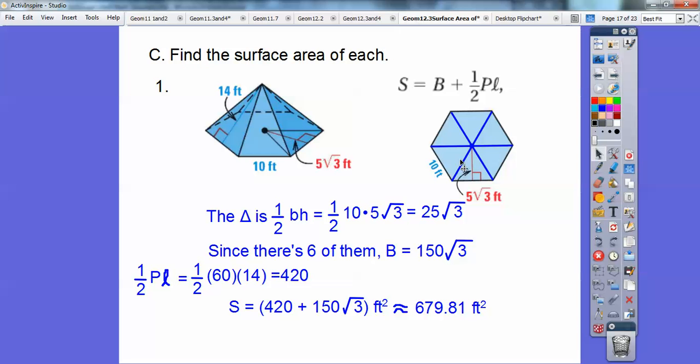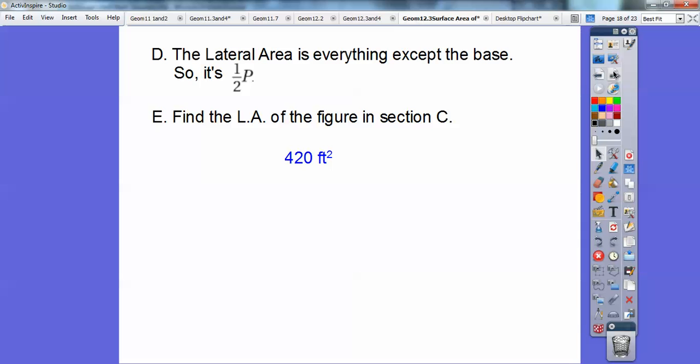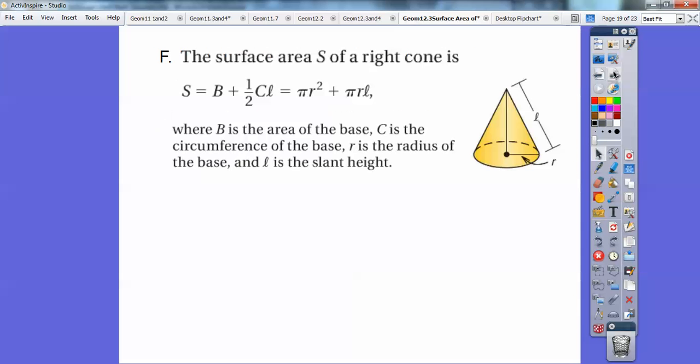So there's that figure right there. The lateral area was just this, this one-half pH. So the answer is just 420 feet squared. So just take off the base parts, the one-half pH, if they ask you for the lateral area.